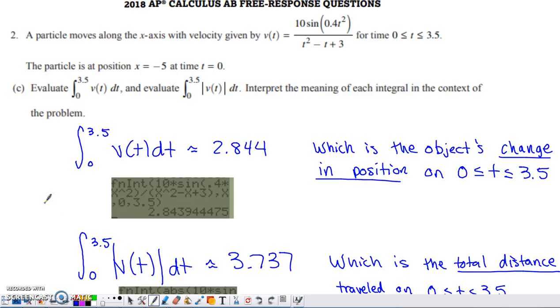Part C has two different things that we're asked to do—two different things that we're asked to evaluate, and then we're asked to interpret what each one represents. So this first one here, it's something that you can again do straight on the calculator. Do the integral from 0 to 3.5 of this velocity function. You see my input to the calculator right here. Rounding that to three digits of accuracy beyond the decimal gives me 2.844.